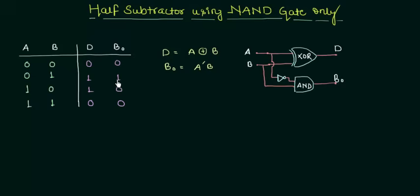And B output is very simple. It is high only for one case when A is low and B is high. So A complement B. And I have implemented it just by using a XOR gate, an AND gate and a NOT gate for A complement.